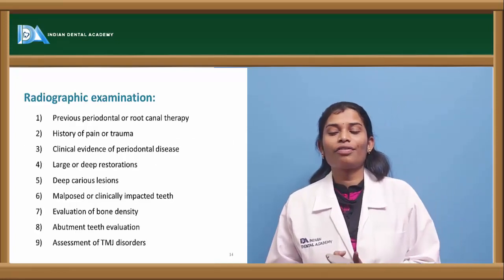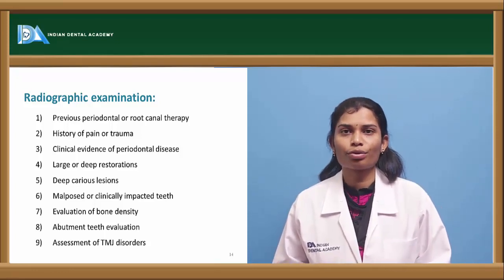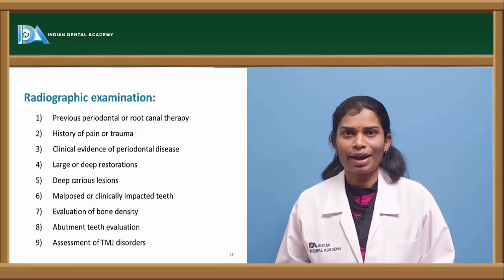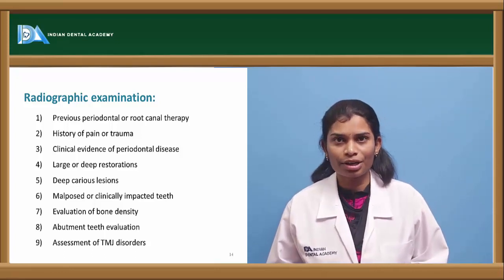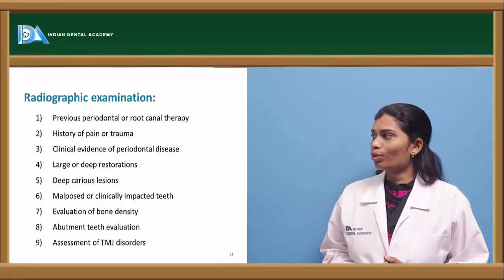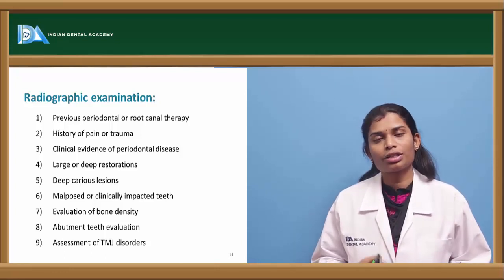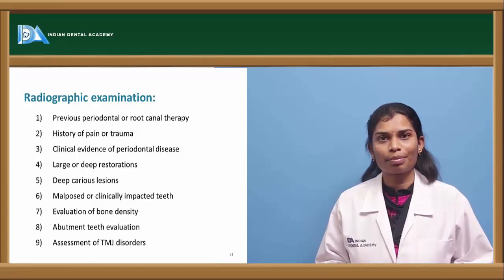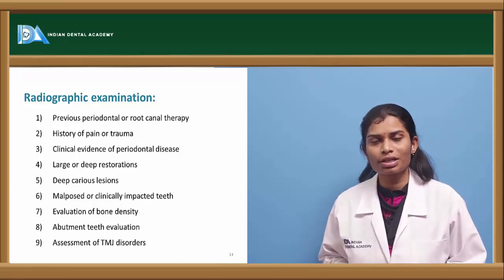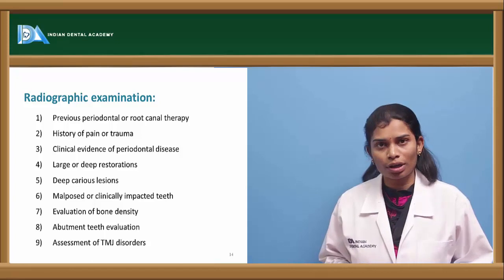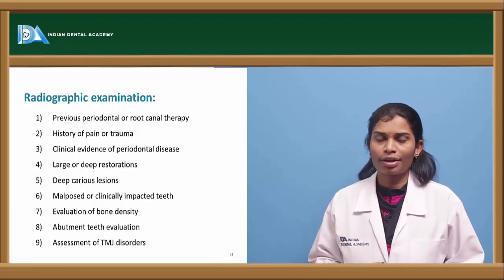Radiographic examination is the most important adjunct to diagnosis. Carry out full mouth radiographic X-rays so that no finding missed clinically is overlooked. Look for any root canal therapy and relate radiographic findings with clinical evidence of periodontal disease. Where bone loss is suspected, take local X-rays to check whether bone loss is angular or horizontal.